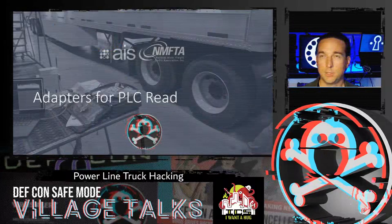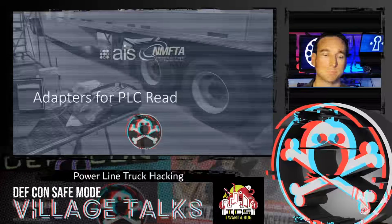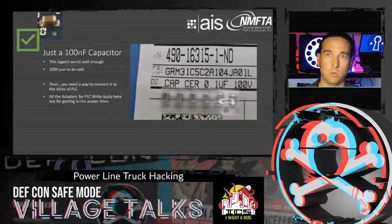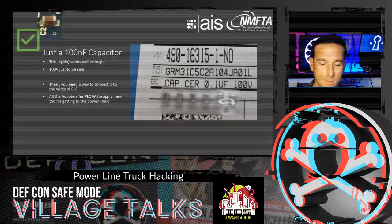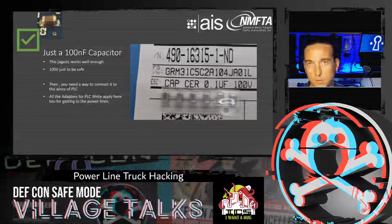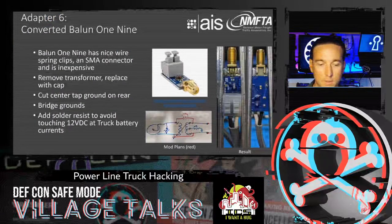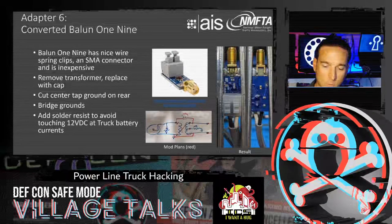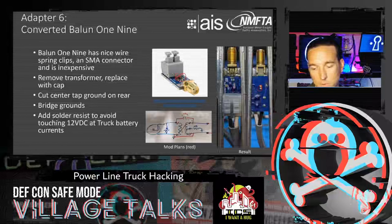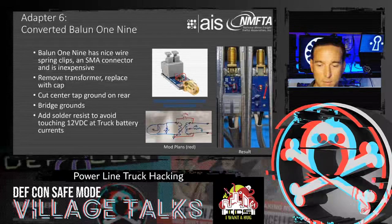Back to Ben. So you can now read PLC signals with GNU Radio — but how do you connect a Ham It Up or direct-receive radio to PLC? Again, just a 100 nanofarad capacitor does the trick. Use 100-volt rated ones to avoid battery currents reaching receivers. A nice solution is modifying Balin 1:9 adapters: remove the transformer, cut the trace at the back, replace with a surface-mount capacitor, bridge the ground, and cover with solder resist to avoid contacting 12-volt battery currents.